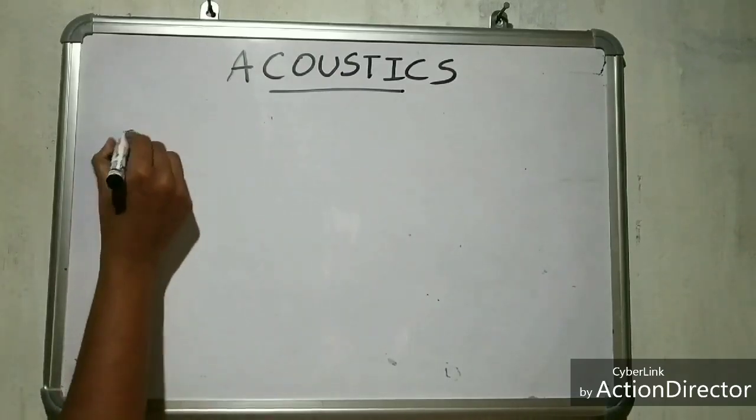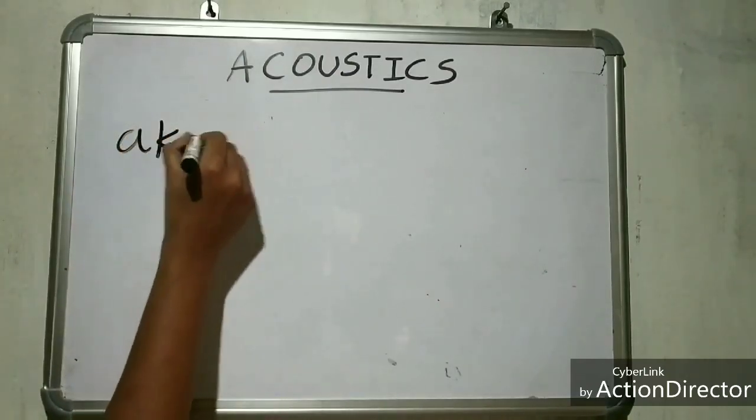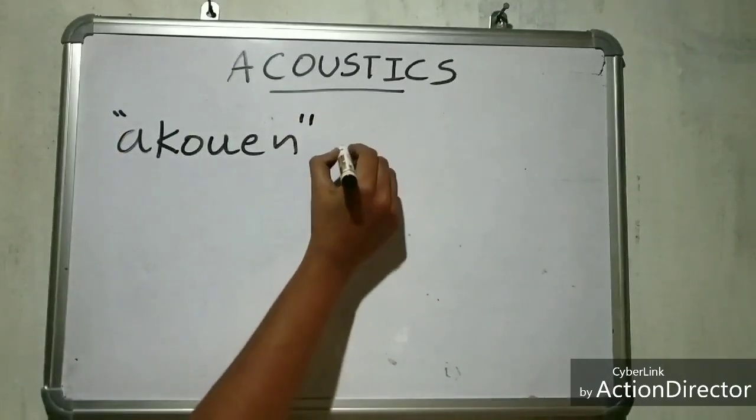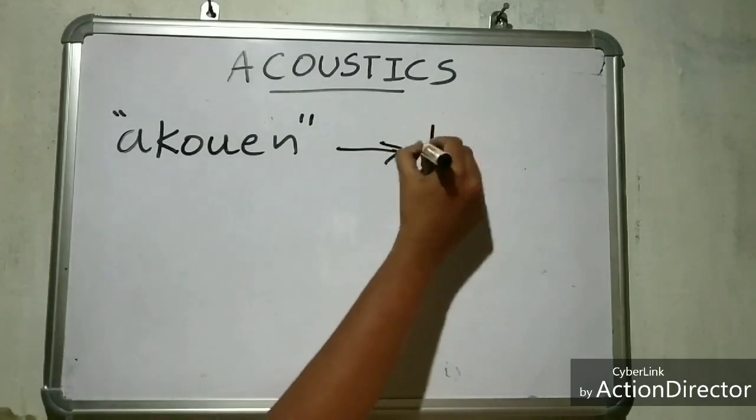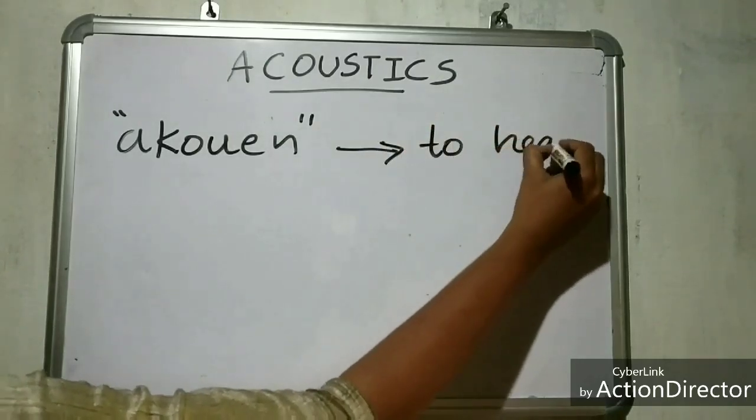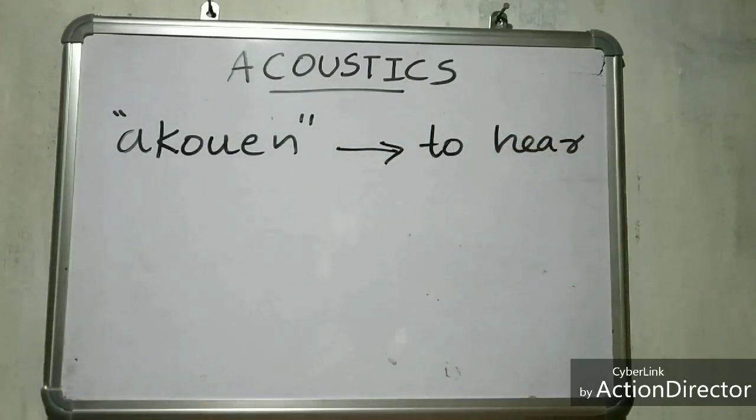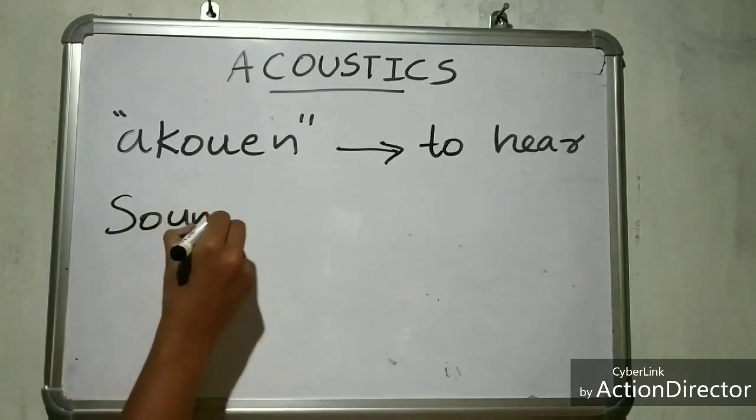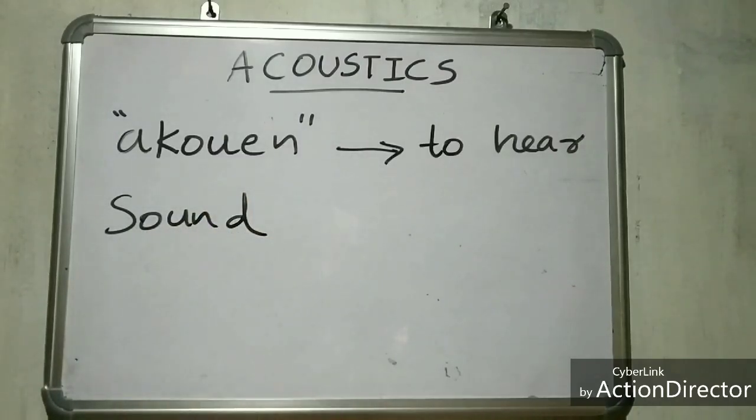The word Acoustics is derived from a Greek word Akouein which means to hear. We can define acoustics as a branch of physics that studies how sound is produced, transmitted, received and controlled.